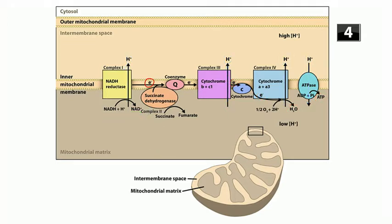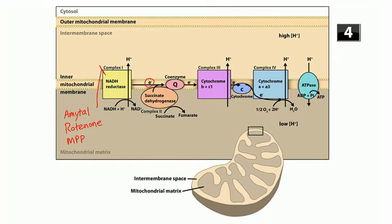What kinds of things interfere with the electron transport chain? Complex I can be inhibited by amytol (a barbiturate), rotenone (a piscicide/insecticide used to eradicate invasive fish species), and MPP (methylphenylpyridinium). When people try to cook up a synthetic version of the opioid meperidine, they also produce a byproduct called MPTP, which gets metabolized to MPP. MPP inhibits complex I and can cause Parkinsonism.